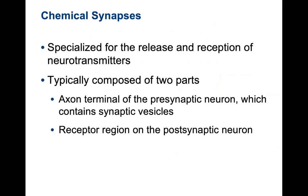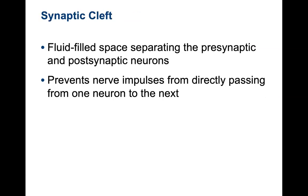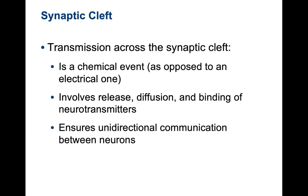There are two parts to the chemical synapse: the axonal terminal of the presynaptic neuron, which contains synaptic vesicles and releases neurotransmitter, and the receptor region on the postsynaptic neuron. The synaptic cleft is the fluid-filled space separating the pre- and postsynaptic neurons — this prevents nerve impulses from directly passing from one neuron to the next. To generate a signal on a second neuron, you must bind neurotransmitter, generate enough stimulus to hit threshold, which then fires the action potential. Transmission across the synaptic cleft is a chemical event involving the release, diffusion, and binding of neurotransmitters, ensuring unidirectional communication.